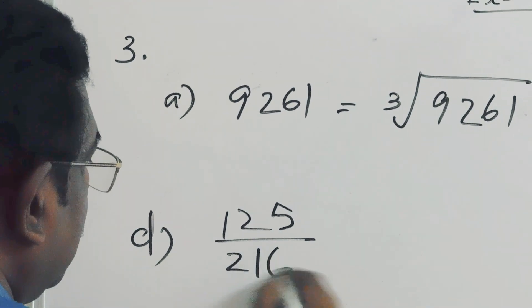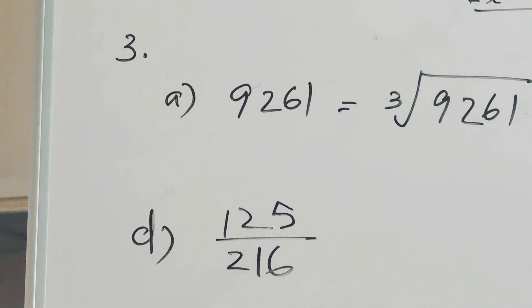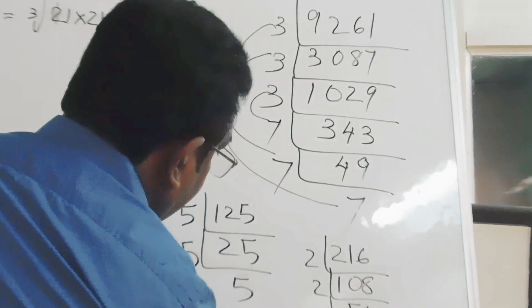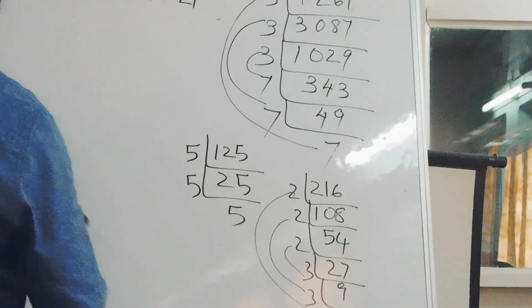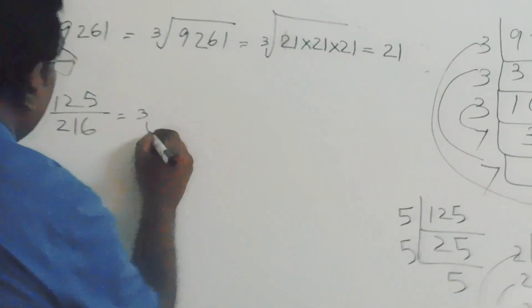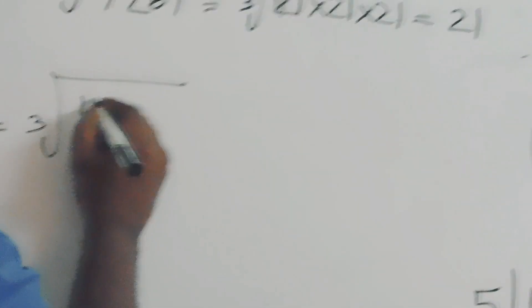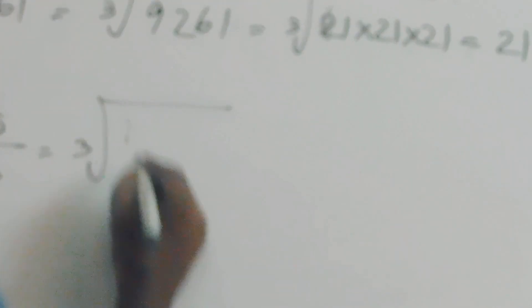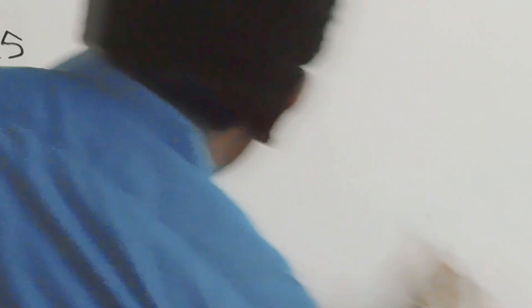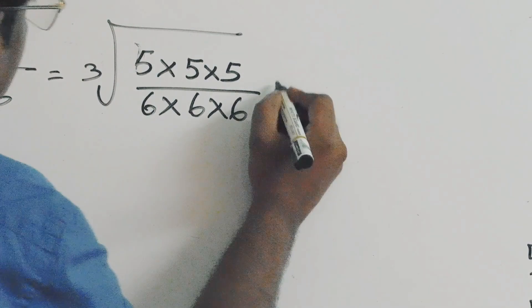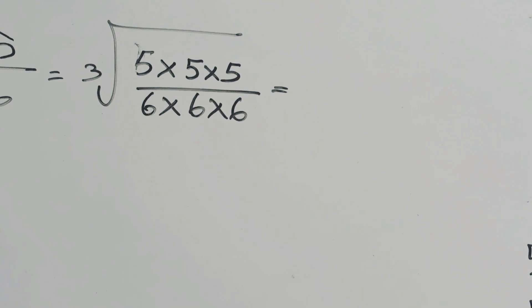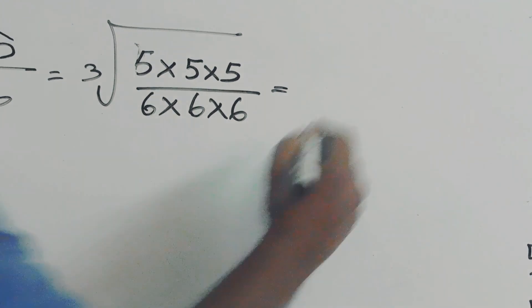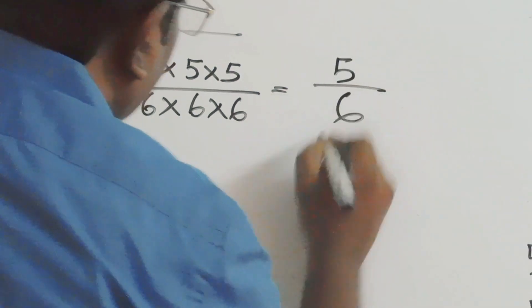We can write cube root of 125 by 216. We can factorize this as 5 cubed by 6 cubed, so we get 5 by 6.